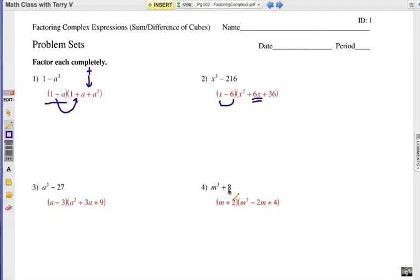Notice number four. 8, yep, that's a perfect cube. It's 2 times 2 times 2. So you put a 2 there, and you square it and put a 4 there. Remember that the sign stays the same in the binomial here, plus and plus, and it is always different for the middle term.